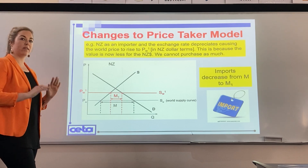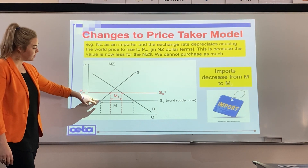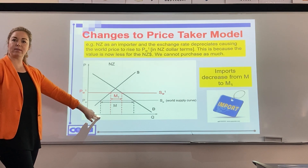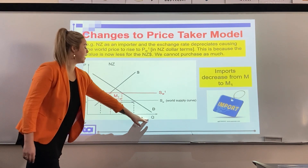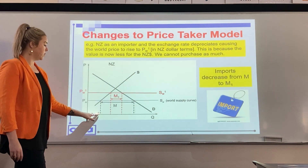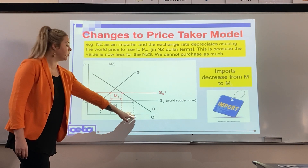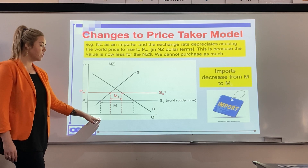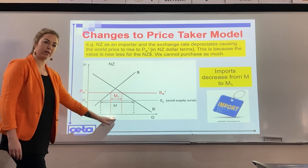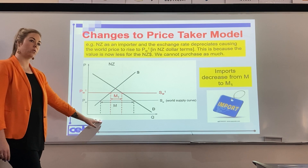We always start at the original PW. Going across where it hits the supply curve, that is labelled Q, S, NZ. Going across to the demand curve, that is labelled Q, D, NZ. Demand is greater than supply, so we need to import the difference — that is your original importing quantity.